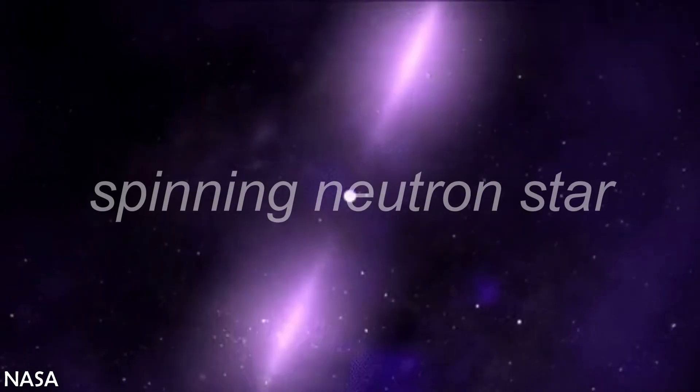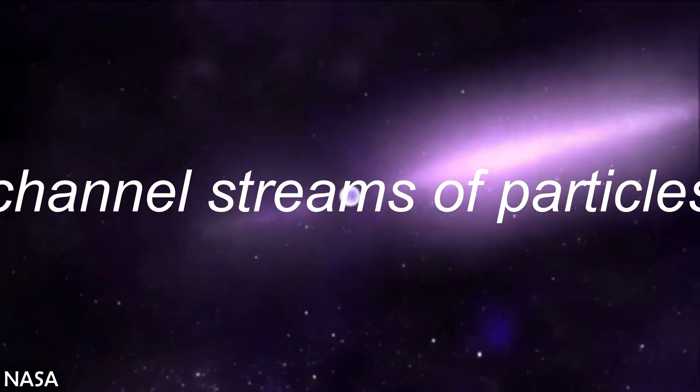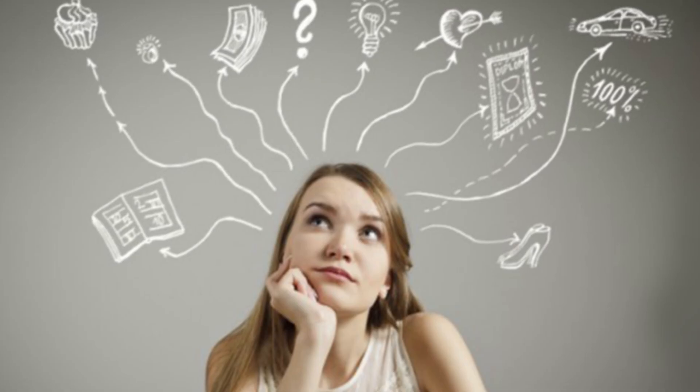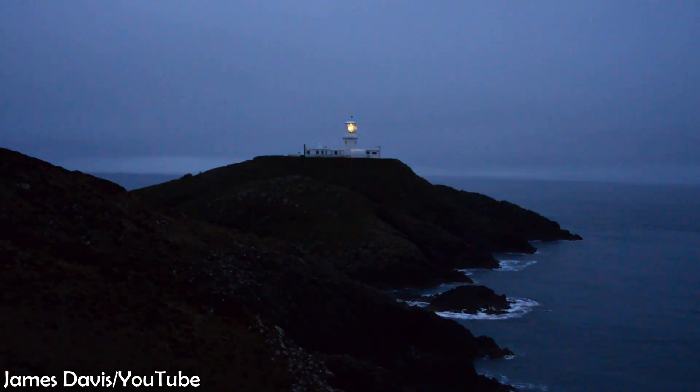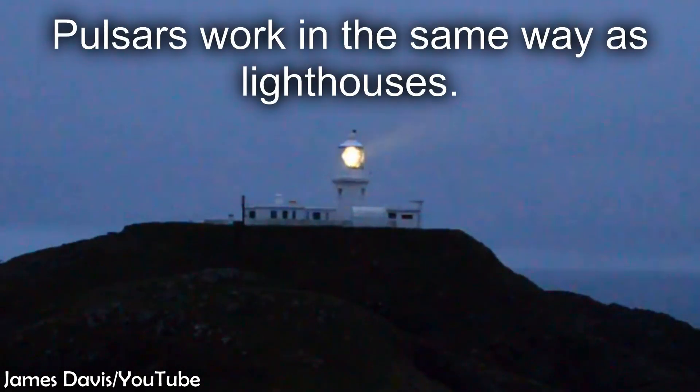It's basically just a spinning neutron star that has powerful magnetic fields that channel streams of particles out of its two magnetic poles. I know that was confusing, so a good way to visualize this would be to picture a lighthouse. At night, they light up and spin, but you only actually see the beam when it is facing your direction. With the case of pulsars, we only see the beam when it is facing us. This gives off the illusion that it is pulsing.